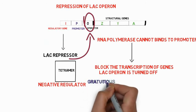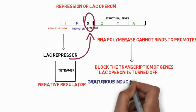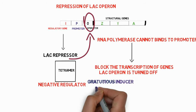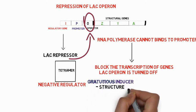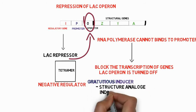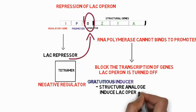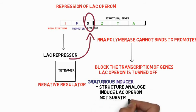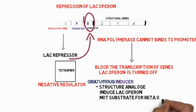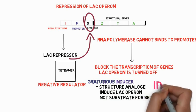Now what is gratuitous inducer? It is the structural analog of lactose that induces the lac operon but is not a substrate for beta-galactosidase, because only lactose is the substrate. This is IPTG.